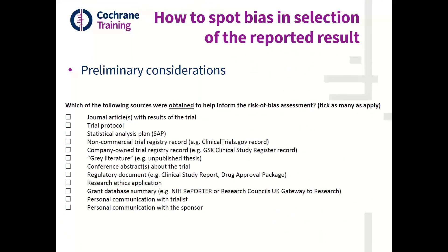So, how do we spot bias in selection of the reported results? The first thing to think about is, for those of you who have already taken a look at the ROB2 tool, you might have noticed that there are a couple of preliminary considerations or checkboxes that we ask you to fill out at the start of the tool before you answer any signalling questions. And the last set of checkboxes on the first couple of pages of ROB2 asks you to indicate which sources you obtained to help inform your risk of bias assessment.